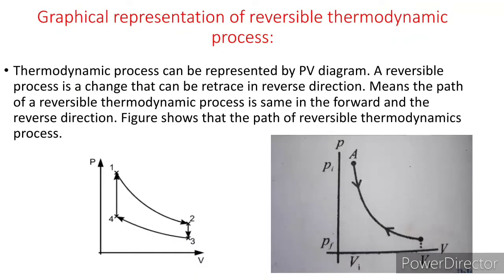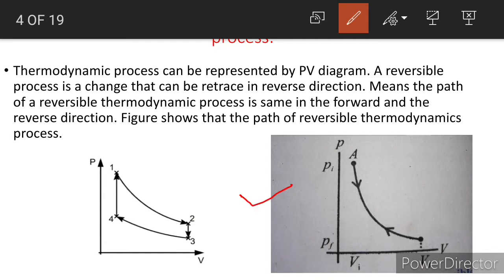Now see the graphical representation of a reversible thermodynamic process. This is the PV diagram of a reversible thermodynamic process. Here Pi is the initial pressure, Pf is the final pressure, Vi is the initial volume, and Vf is the final volume. A reversible process is a change that can be retraced in reverse direction, meaning the path is the same in the forward direction and in the reverse direction.